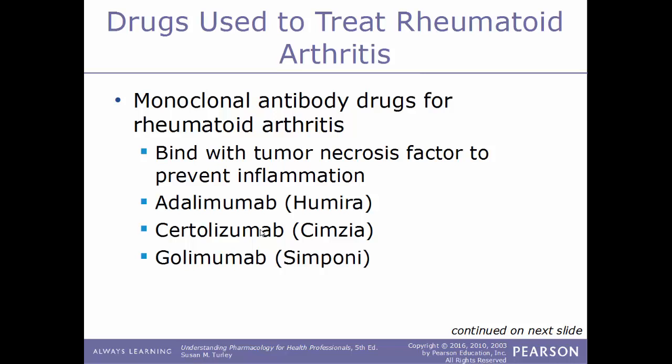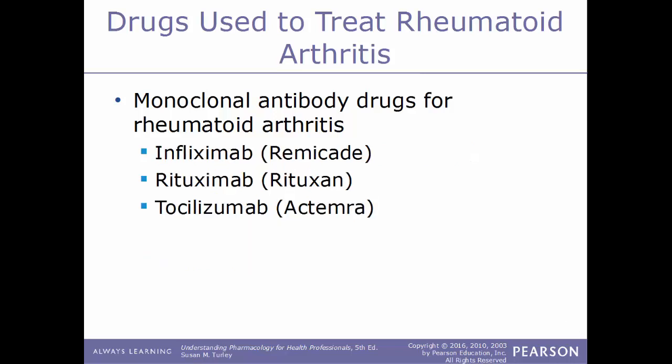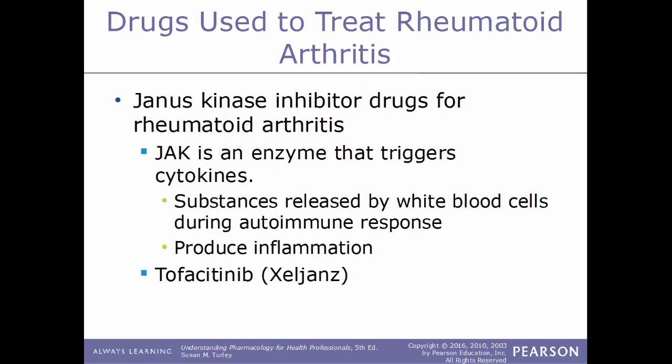Another type of drug used to treat RA is monoclonal antibody drugs. These bind with tumor necrosis factor to prevent inflammation. Examples include adalimumab (Humira), certolizumab (Cimzia), golimumab (Simponi), infliximab (Remicade), rituximab (Rituxan), and tocilizumab (Actemra).